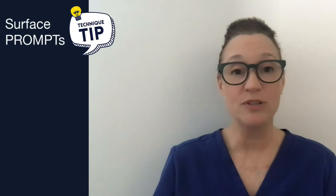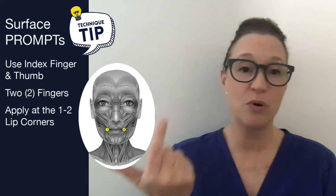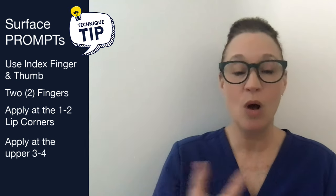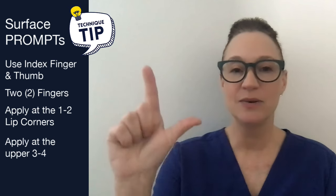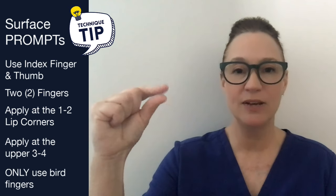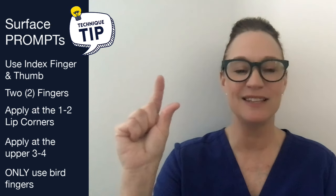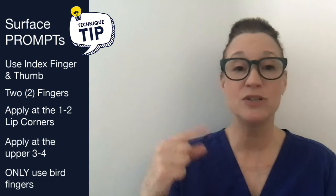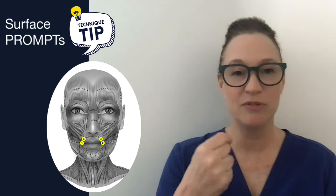Now let's get back to the question: how many fingers? For surface prompts, you're going to be using your index finger and your thumb — two fingers. This applies at the 1-2 lip corners for a motor phoneme link such as 's' or 'oo', or the upper 3-4 for a motor phoneme link such as 'e'. Notice how they're bird fingers. Using just these two fingers helps with your rotations, timing, and flexibility.